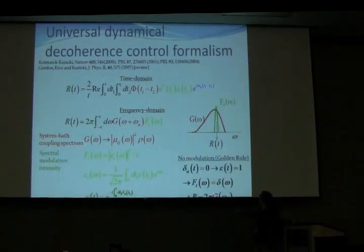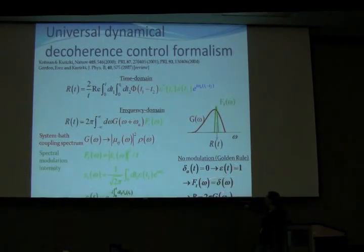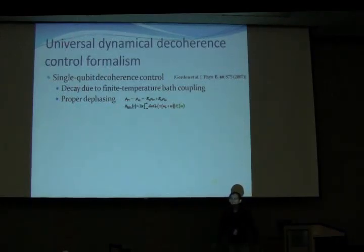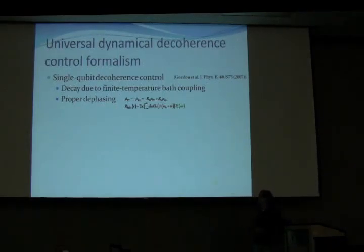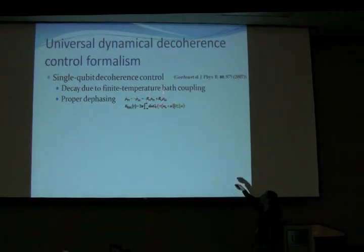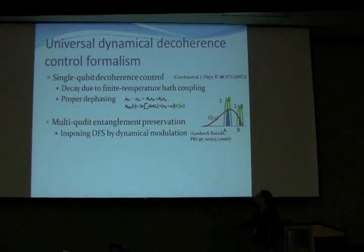To convince you that the word 'universal' is appropriate, we have shown that a decay or damping channel due to finite-temperature bath coupling, and also proper dephasing, result in the same modified Bloch equations and the same decoherence rates. For the case of no modulation, the spectral modulation intensity is a delta function, and we recover the known golden rule. So this is a universal formula for the dephasing rate and decoherence rate.